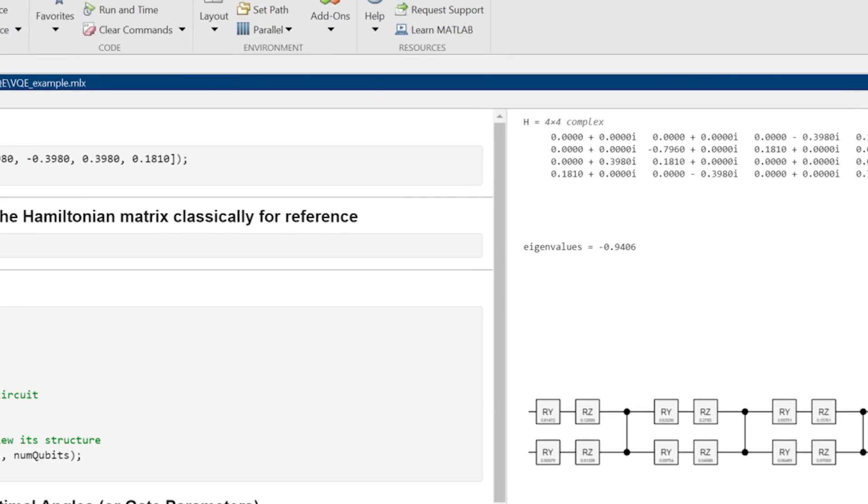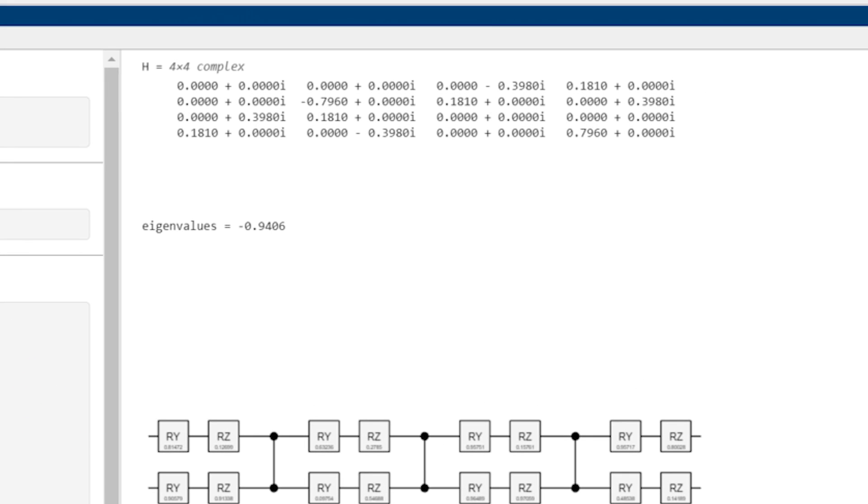We calculate all the eigenvalues and then take the minimum to get the lowest eigenvalue of the Hamiltonian. Now we know what to expect from a VQE algorithm once it is optimized.